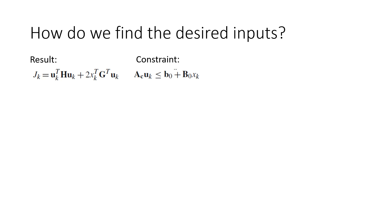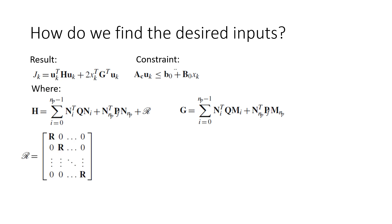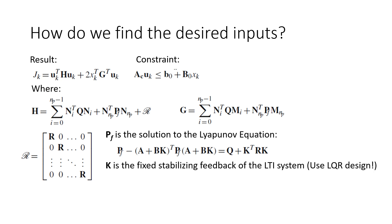This summation gives us our cost function j for the entire prediction horizon as shown, and we can also apply constraints on our inputs. The h and g matrices can be found using the following summations, where the fancy r matrix is just the diagonal matrix of the r matrices, and the P_F matrix can be found by solving the Lyapunov equation, where k is the fixed stabilizing feedback matrix of the LTI system, which you could determine using the LQR design we discussed in class. If we minimize j, we can find the optimum inputs over our prediction interval. Our controller can then deliver the first optimum input to the system and repeat the process all over again.